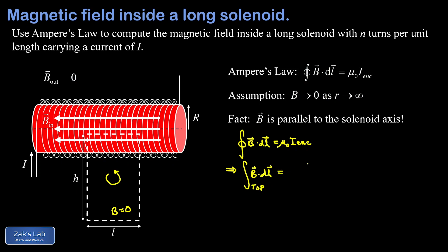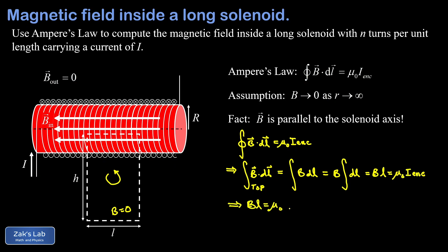Along the top path, B always points in exactly the same direction as the dl's, so the dot product is trivial and gives B times dl. By symmetry, the field magnitude B doesn't change along this path for a very long solenoid — there's nothing to bias it growing or shrinking left to right — so B factors out of the integral. We end up with B times the integral of dl, which is just the length l of that segment: B·l on the left-hand side of Ampere's law.